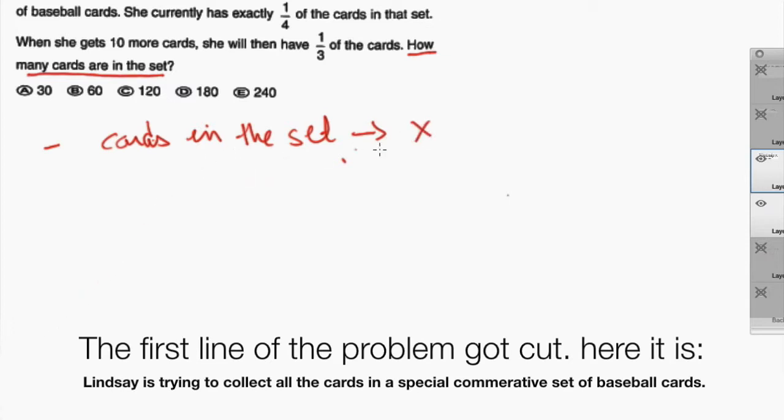All right so we have what we are looking for. Let's look at the other parts of the problem. First sentence is just telling she's collecting some baseball cards. Second sentence says that Lindsay currently has exactly one-fourth of the cards in the set. So her current situation is that she has one-fourth of the cards. Now going back to our fractions lesson I hope you remember how to translate 'of'. 'Of' means that you are just multiplying.